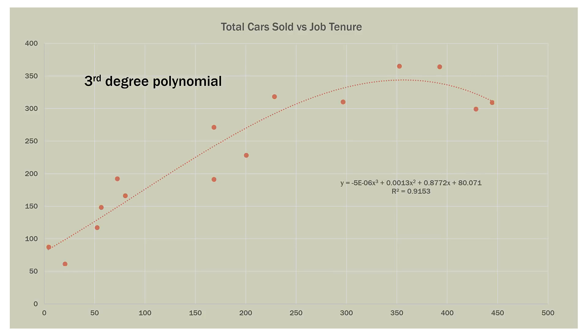Here's the graph of the third-degree polynomial. It looks fairly similar to the quadratic model — it starts in the lower left, goes up over a hill, and comes back down to the right. It actually doesn't look all that much different on the graph.